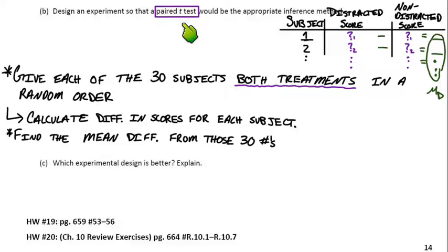So with a paired T test, we're not subtracting two means. We're not doing the mean of this group minus the mean of this group. We're actually a little bit more specific. We're going to find the mean difference from each pair.